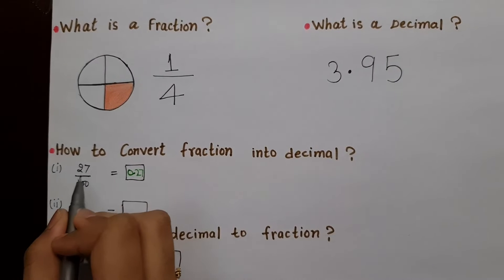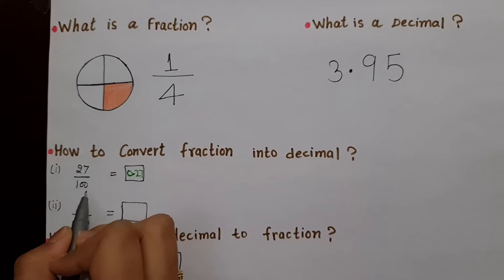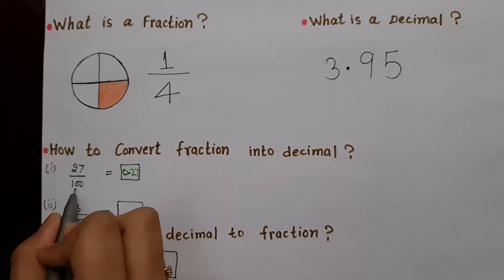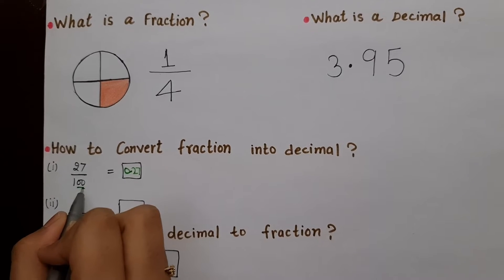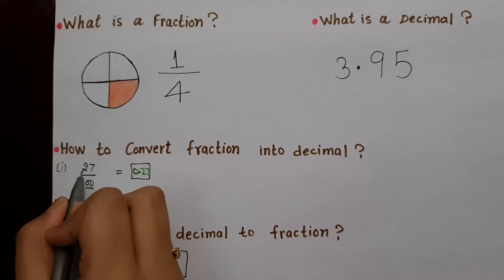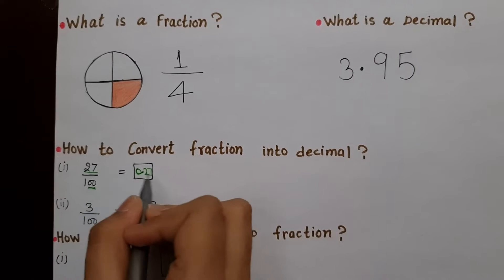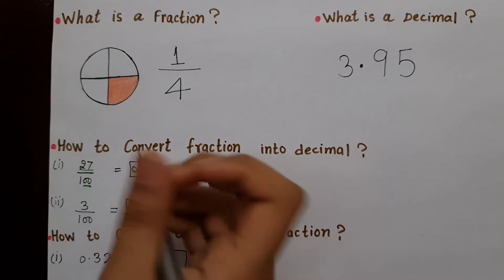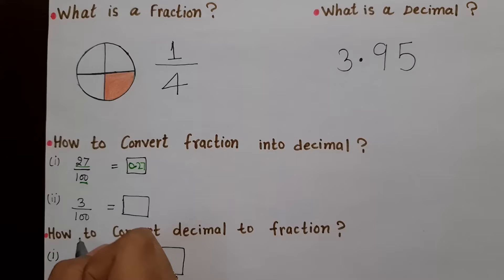So whenever we convert fractions into decimals, we always have to look at the number of zeros. So here we have two zeros. So we have to move the number two steps to the right. I hope you understood. Now let us go to our next question.